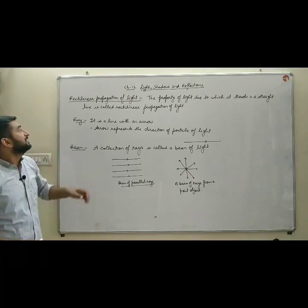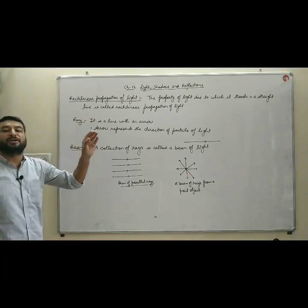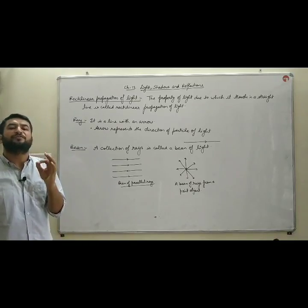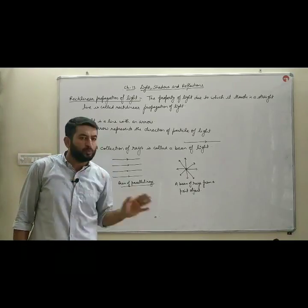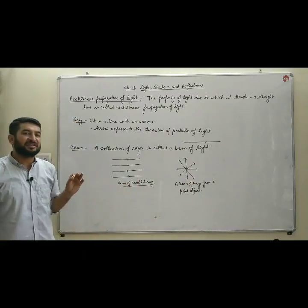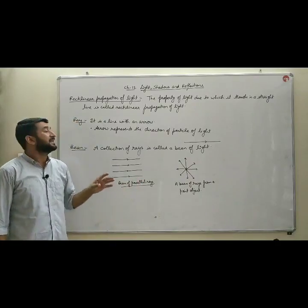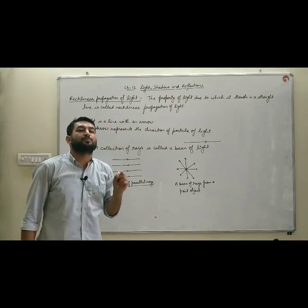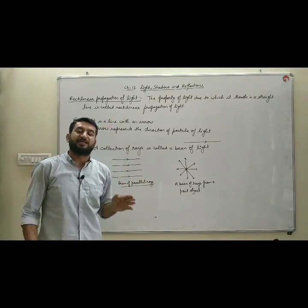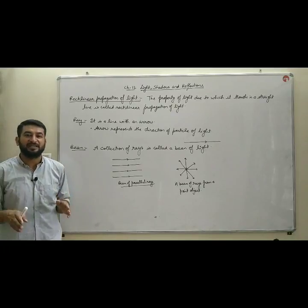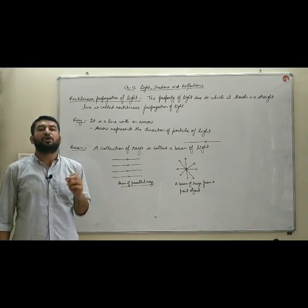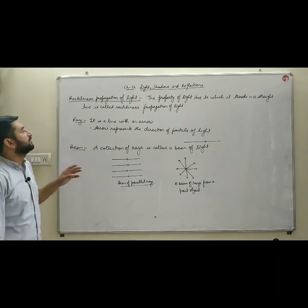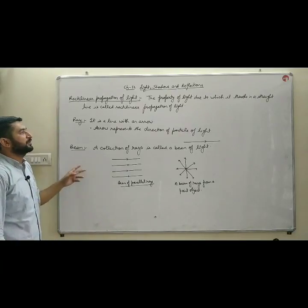Now we will discuss rectilinear propagation of light. The property of light due to which light always travels in a straight line or straight path is known as rectilinear propagation of light. It is the property of particles of light due to which it always travels along a straight path.